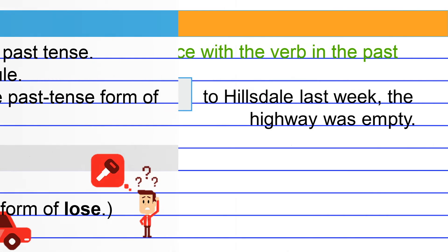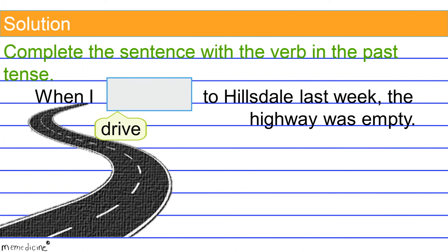Back to the original question and now for the solution. 'Drove' is the simple past tense verb form of 'drive.' This is an irregular verb form, so you'll have to commit it to memory.